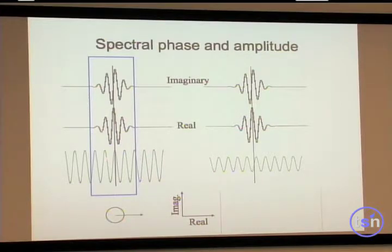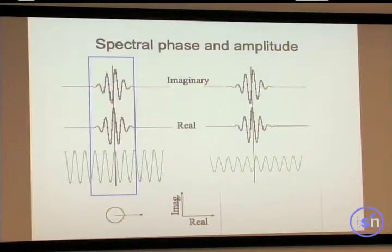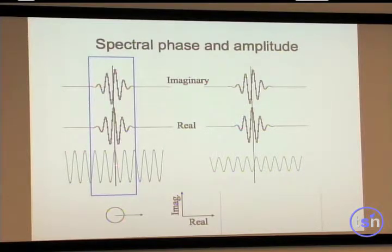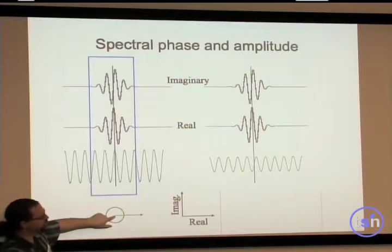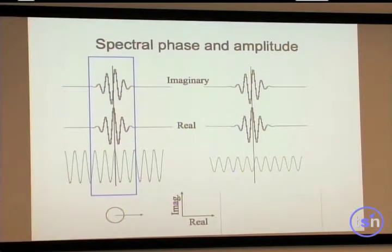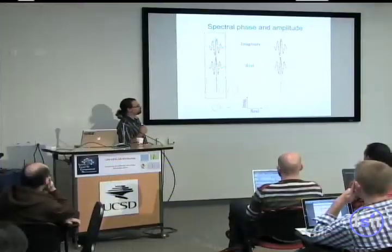When the peaks are perfectly aligned I get a large positive number. On the contrary, when I multiply the imaginary part with a signal that is out of phase, some products will be positive and some negative, and they cancel out, giving zero. So on the real axis I get a large positive number, and on the imaginary axis I get zero.